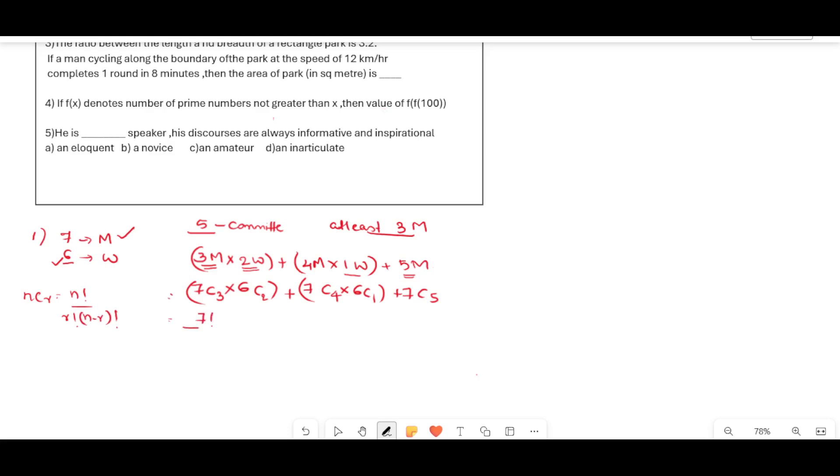That is 7 factorial by 3 factorial into 4 factorial, 6 factorial by 2 factorial into 4 factorial. Next, 7 factorial by 4 factorial into 3 factorial, 6 factorial by 1 factorial into 5 factorial. And the last term would be 7 factorial by 5 factorial into 2 factorial. From calculation we can get this answer as 756. This is the final answer.